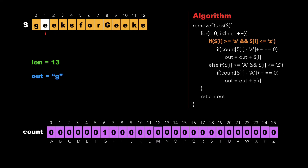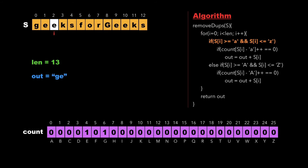Now i points to 'e', which is also a lowercase character. We check whether the value of 'e' in the count array is 0. Since it is 0, we increment the count of 'e' and update the value of 'out' by concatenating 'e'. So the value of 'out' is now 'ge'. We continue this process for all the characters of the string.